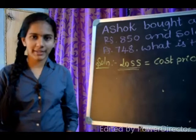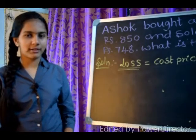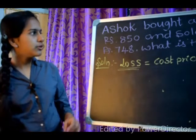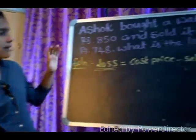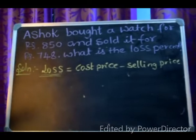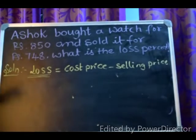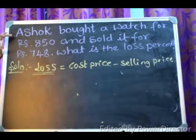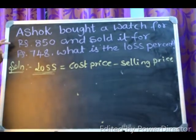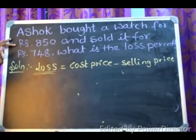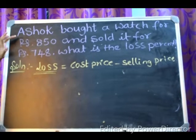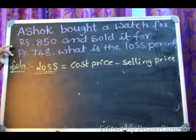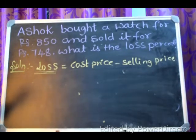Welcome back to Chalikya Multi-Talent Academy. Today let's see a sum based on profit and loss. The question is: Ashok bought a watch for rupees 850 and sold it for rupees 748. What is the loss percent?